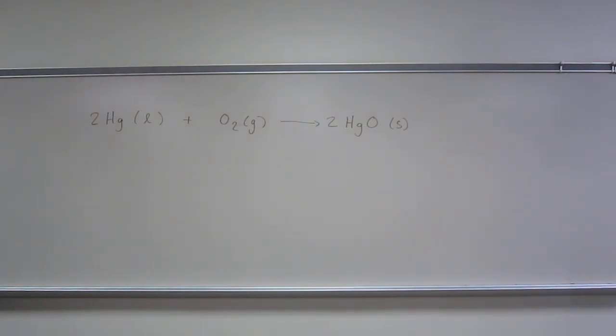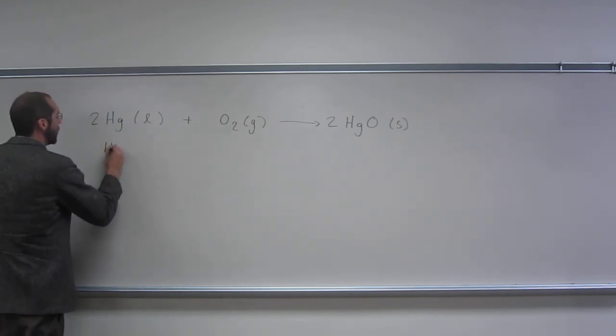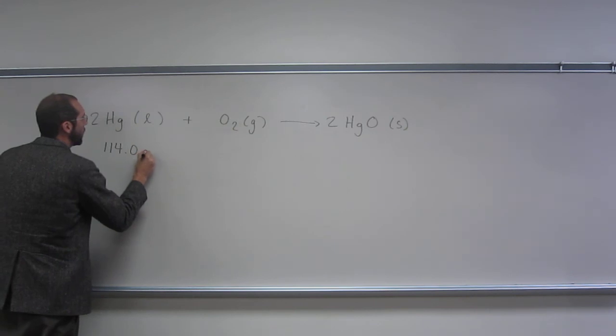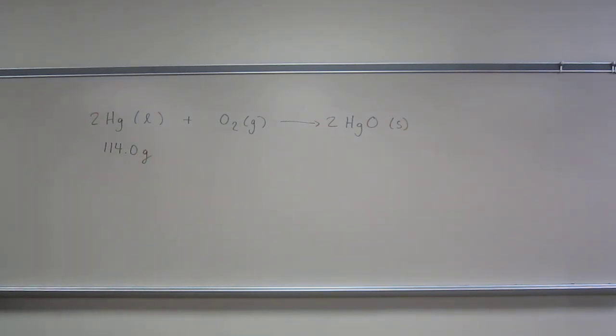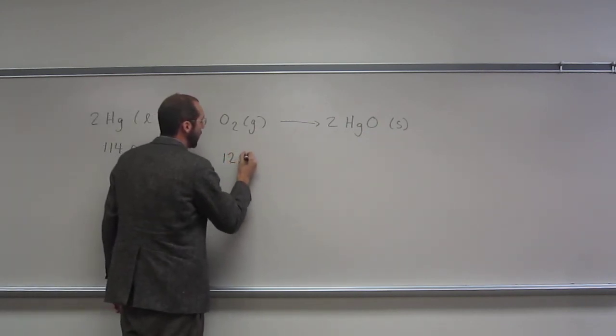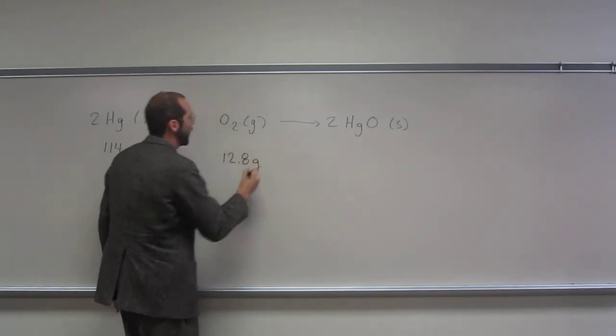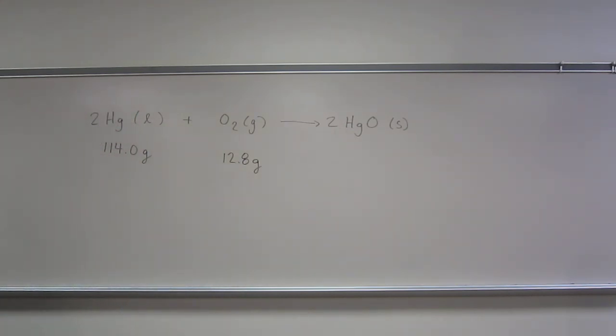It says that the sample of mercury had a mass of 114.0 grams and it was combined with 12.8 grams of oxygen gas. The resulting reaction gave 123.1 grams of mercury 2 oxide.